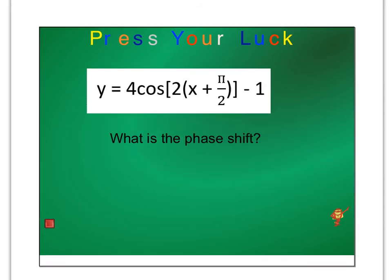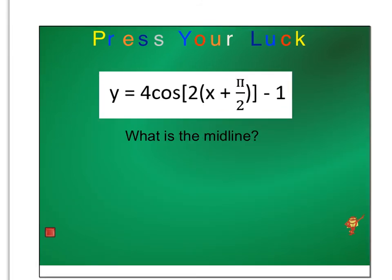What is the phase shift? Remember, it's your b. It's going to be negative π over 2. So it's going to be to the left, π over 2. What is the midline? This is your d in the back here. So your midline is at y equals negative 1.